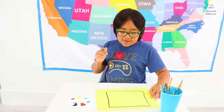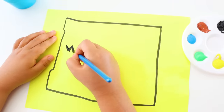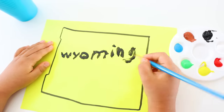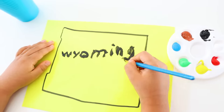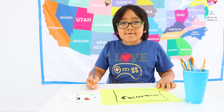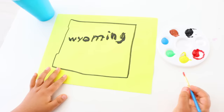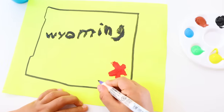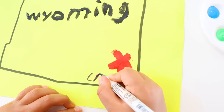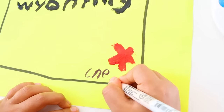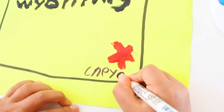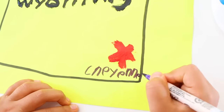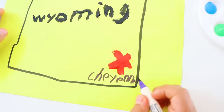First, I think I should put the name Wyoming on it: W-Y-O-M-I-N-G. Next, the capital of Wyoming is Cheyenne. I'm going to draw a star right here. C-H-E-Y-E-N-N-E. All right, there it is — Cheyenne.